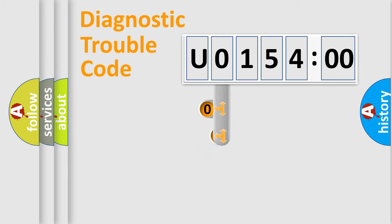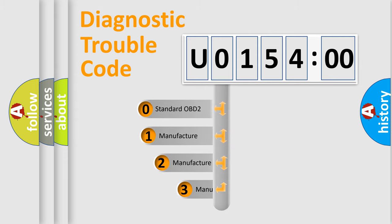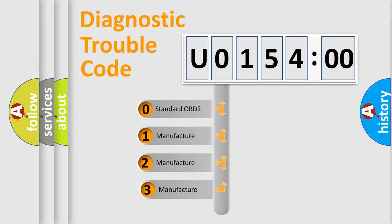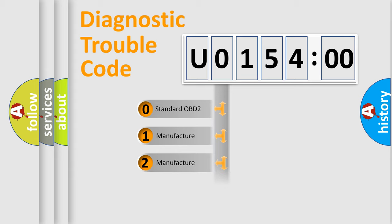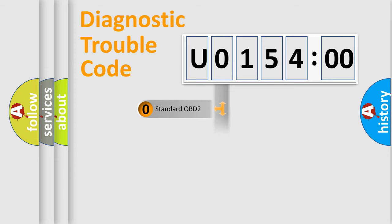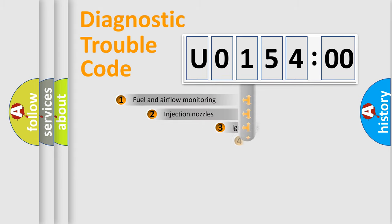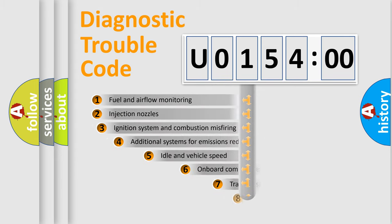This distribution is defined in the first character of the code. If the second character is expressed as zero, it is a standardized error. In the case of numbers 1, 2, or 3, it is a more specific expression of a car-specific error.